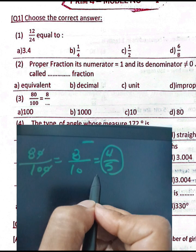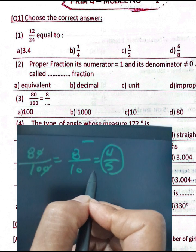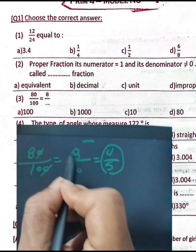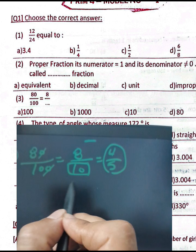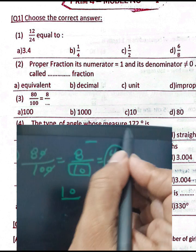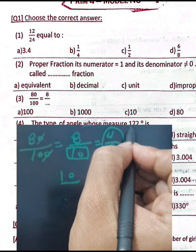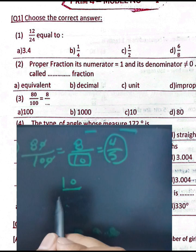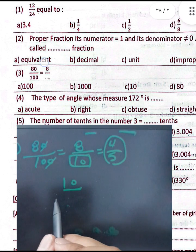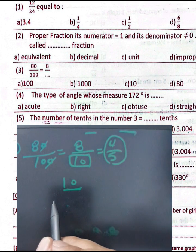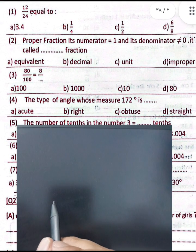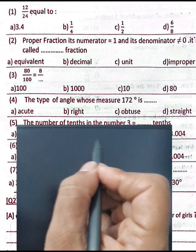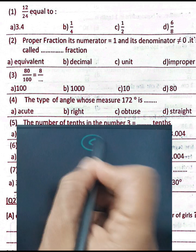But if you need to find 8 over 10, the result will be 10 — choose letter C. Question number four: the type of angle that measures 172 degrees. We call it an obtuse angle — choose letter C.